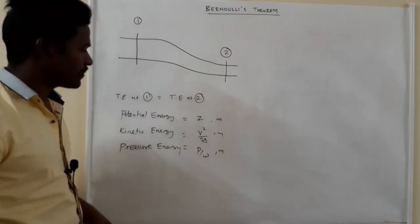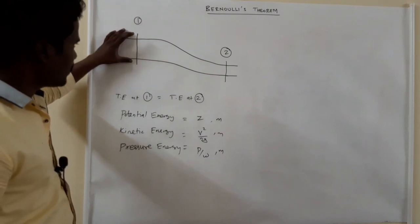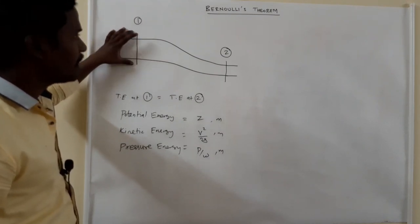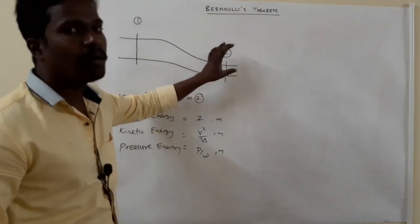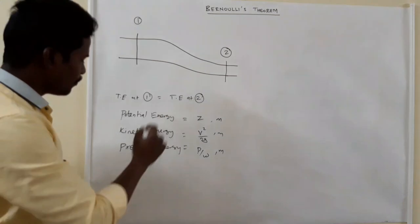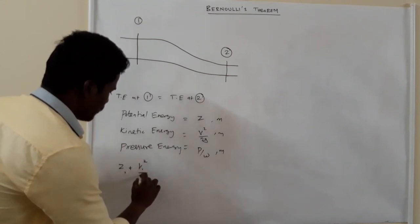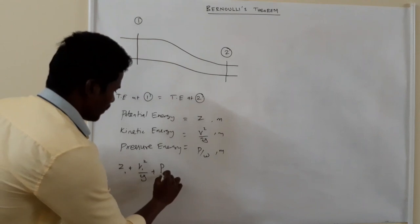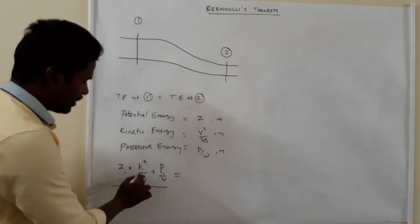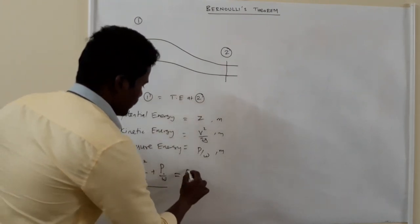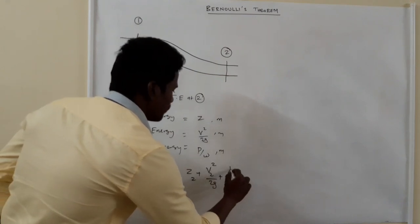So if Bernoulli's theorem, the sum of potential energy, kinetic energy and pressure energy at point 1 is equal to the sum at point 2. So to prove it: Z1 plus V1 squared by 2G plus P1 by W equals Z2 plus V2 squared by 2G plus P2 by W.